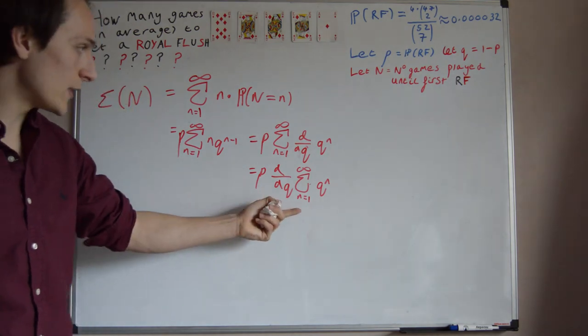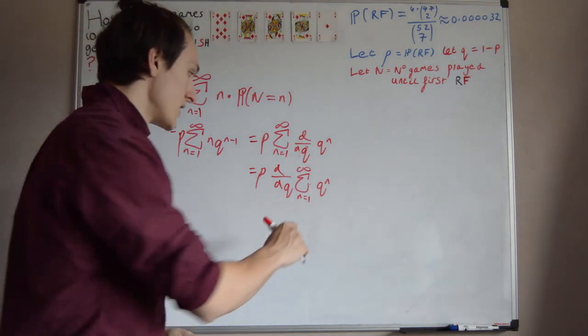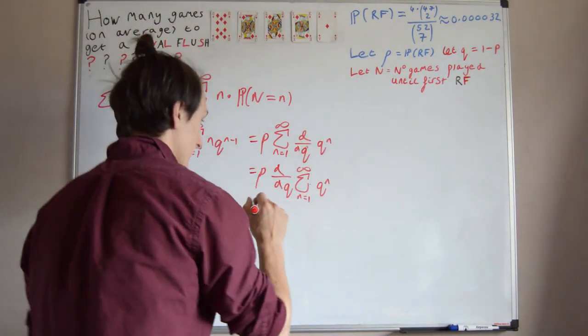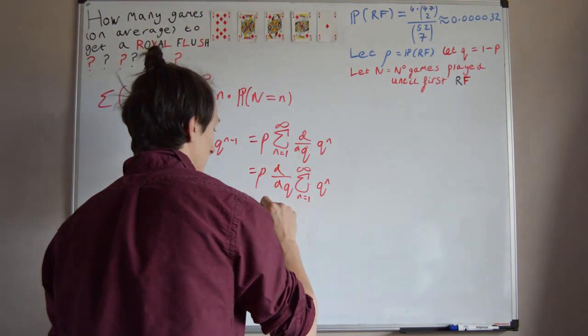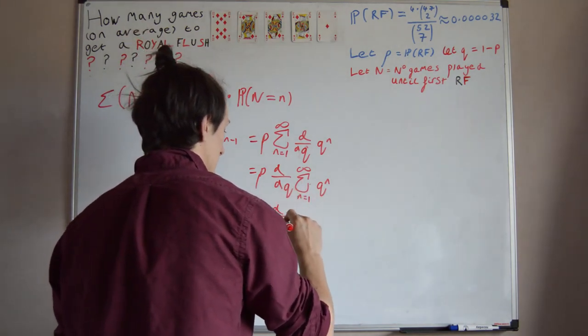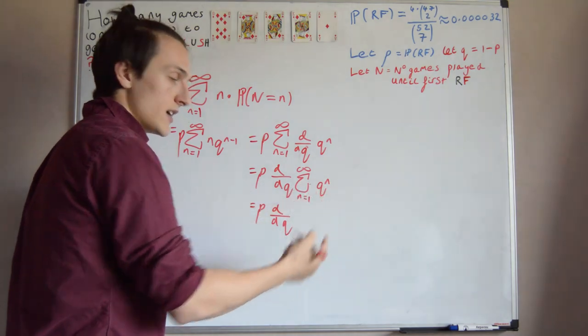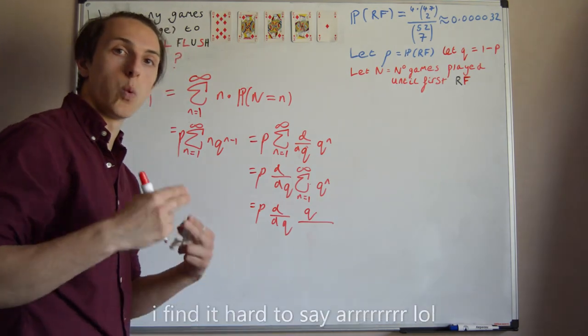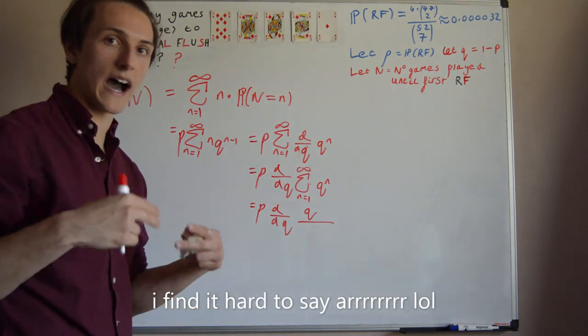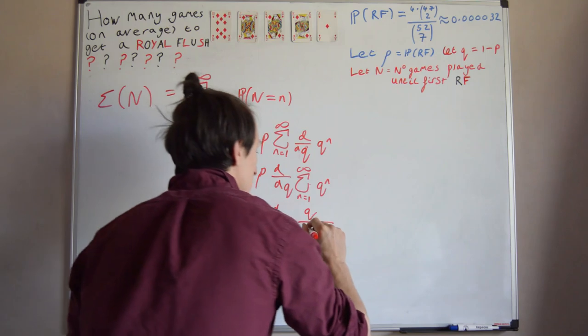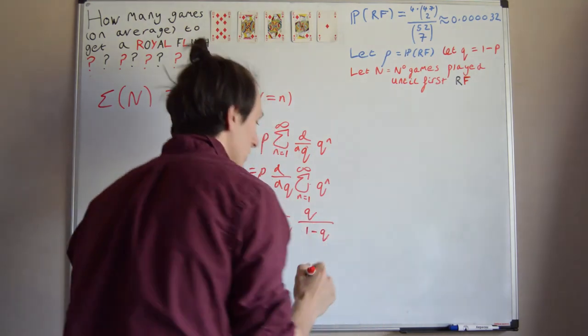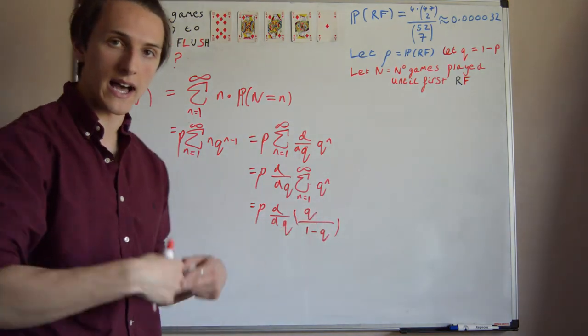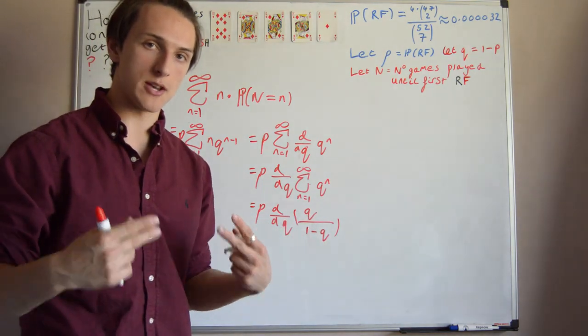Now this is just a geometric series, we can evaluate this. And we can evaluate this because Q is definitely less than 1, because it's a probability. So this is equal to P times d by dq of this thing. Well, the first term is Q, and we're going to be divided by 1 minus R, where R is the common ratio. In this case, R is Q, so we have 1 minus Q on the bottom, and it's the differential of this thing. And we got this just from applying the infinite geometric series formula.